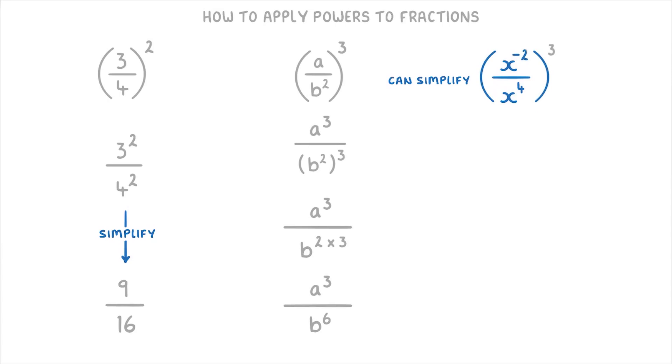To simplify x to the power of minus 2 over x to the power of 4, remember that it's exactly the same thing as x to the power of minus 2 divided by x to the power of 4. So all we have to do is subtract the two powers. So minus 2 minus 4, giving us minus 6.